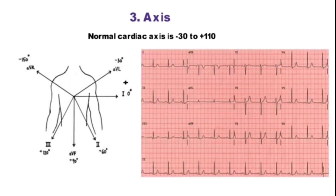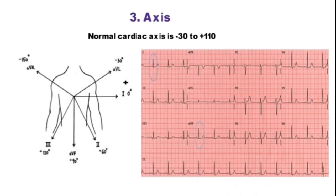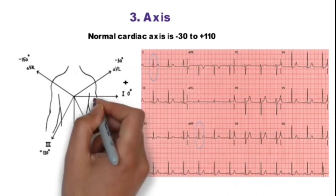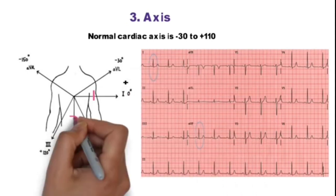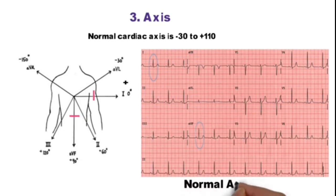In this ECG, net QRS complex in lead 1 and AVF are positive. If we plot these positive deflections on this diagram we will get a vector in the normal cardiac axis range. So this is a normal axis ECG.